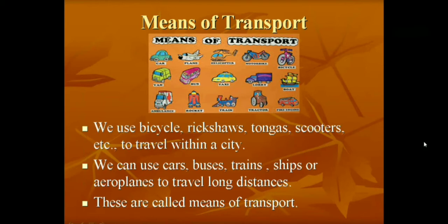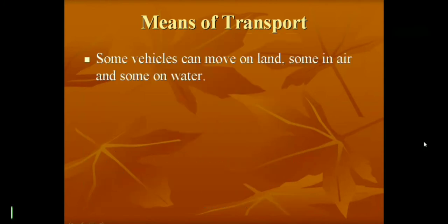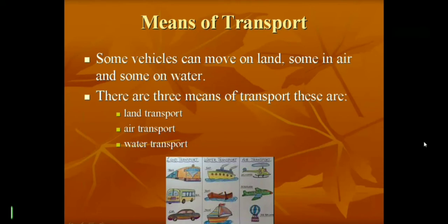Depending on how far we want to travel, we choose our means of transport. Some vehicles can move on land, some in air, and some on water. So there are three types: land transport, air transport, and water transport. Land transport includes trains, buses, and cars. Water transport includes ships, boats, and yachts. Air transport includes helicopters, aeroplanes, and parachutes.